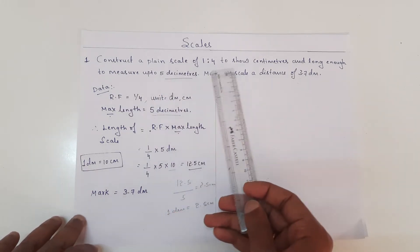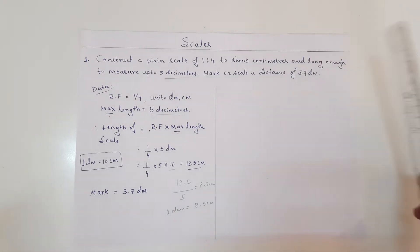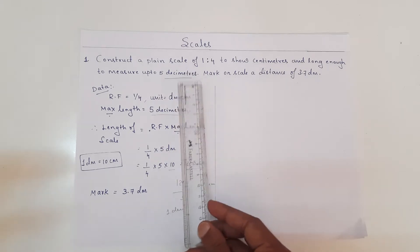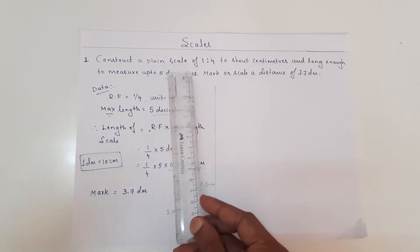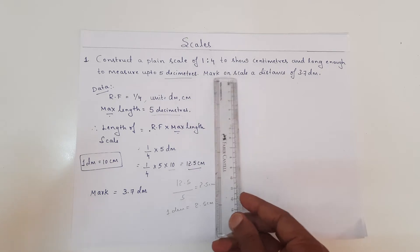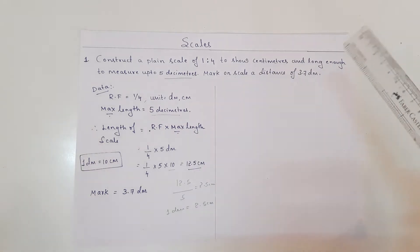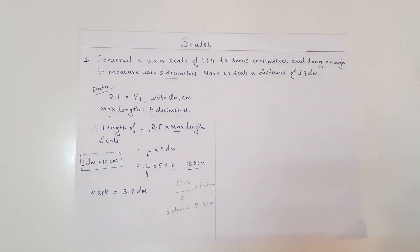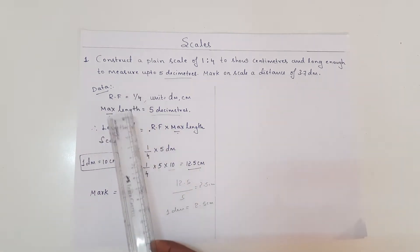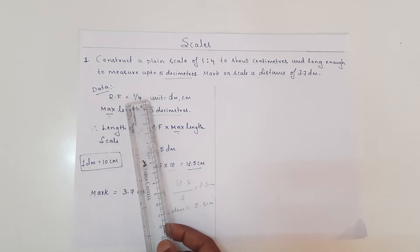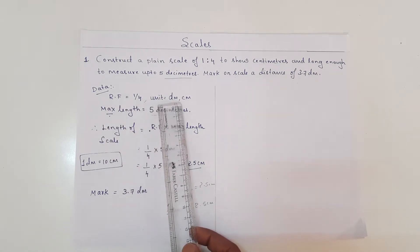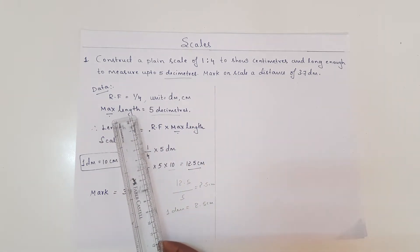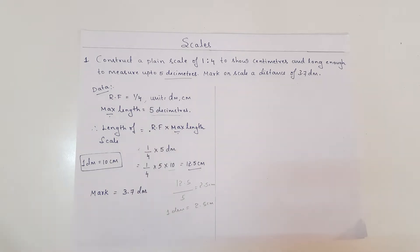Construct a plane scale of 1 is to 4 to show centimeters and long enough to measure up to 5 decimeters. We need to construct a maximum length of the scale of 5 decimeters. Mark on the scale a distance of 3.7 decimeters. The data required is: representative factor 1 by 4, unit is decimeter and centimeter, and maximum length of scale is 5 decimeters.